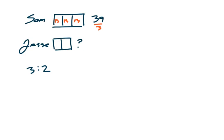Well, because we drew Jesse's boxes the same, and the ratio is 3 to 2, Sam has 3 boxes, Jesse has 2, that would mean that her boxes are also worth 13. So we can tell that we have two groups of 13 here, which means that Jesse ate 26 fruit snacks.